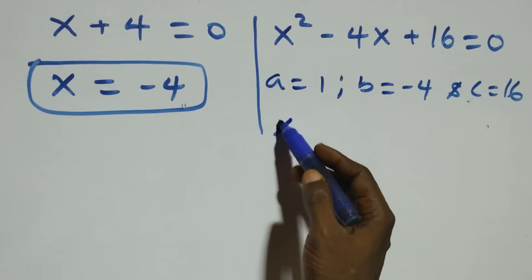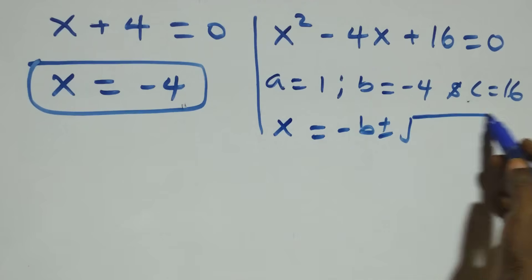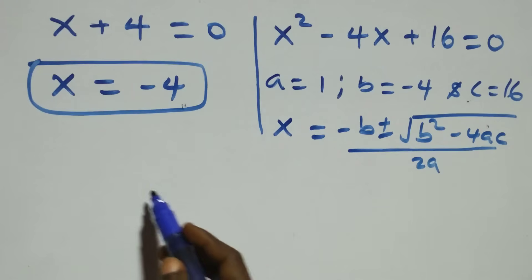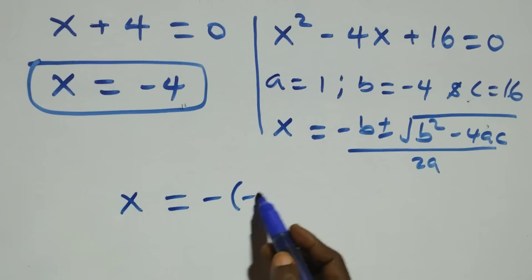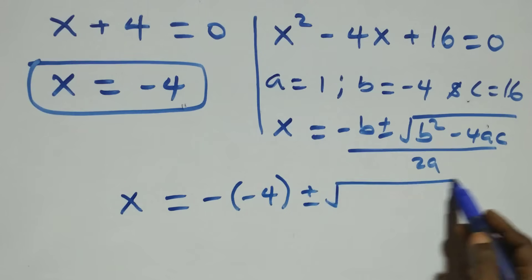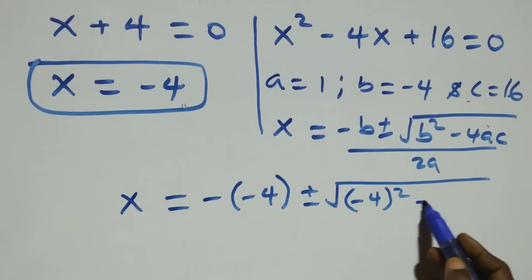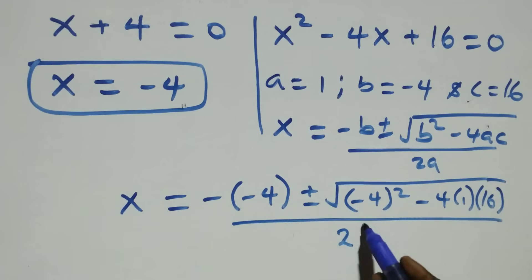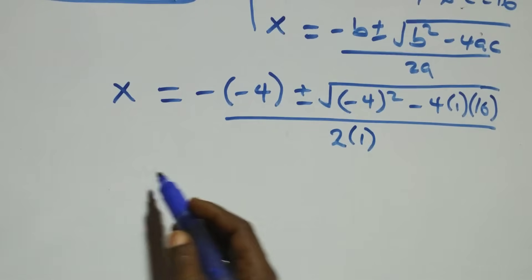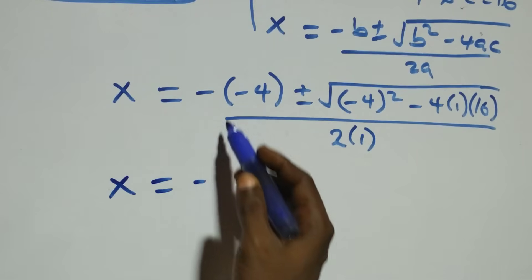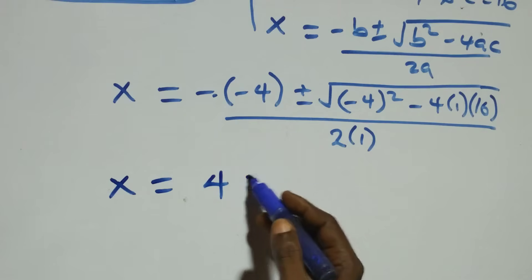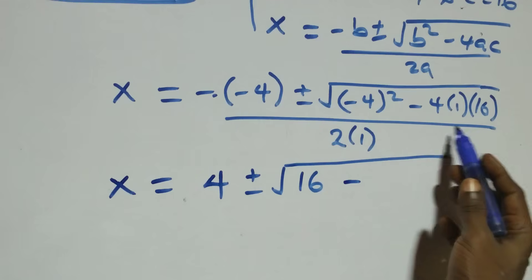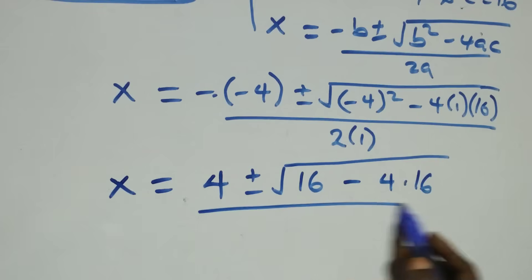Applying the quadratic formula x equals to minus b plus or minus square root of b squared minus 4ac, over 2a, we get x equals to minus minus 4, plus or minus square root of minus 4 squared minus 4 times 1 times 16, all over 2 times 1. This simplifies to x equals to 4 plus or minus square root of 16 minus 4 times 16, over 2.